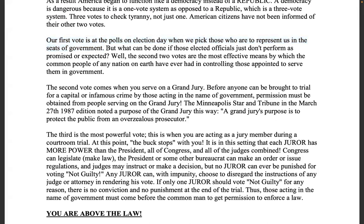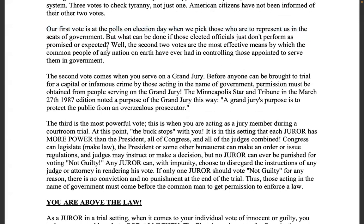What can be done if elected officials don't perform as promised? The second and third votes are the most effective means by which common people have ever had for controlling those appointed to serve in government. We also have the means of forming common law grand juries at will, investigating any type of fraud, corruption, or violations of the constitution, and indicting criminals to have them tried and thrown in prison. It just takes better education on our part.